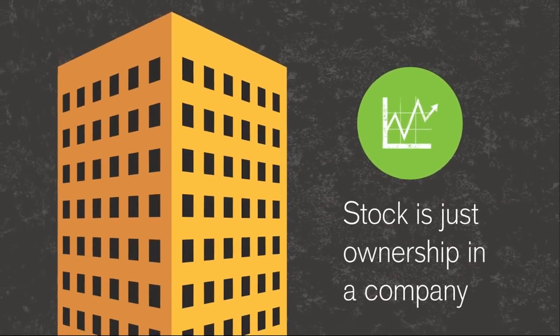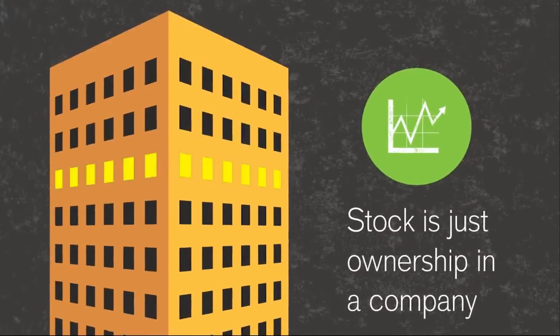Stock is just ownership in a company. There are many ways to classify stock. Two major ones are size, called market capitalization or cap, and company location. Each classification has its own typical level of risk.